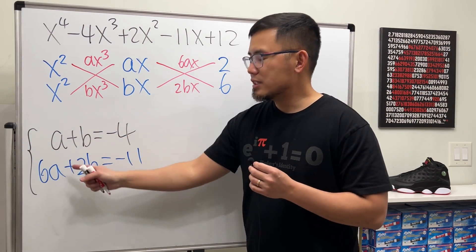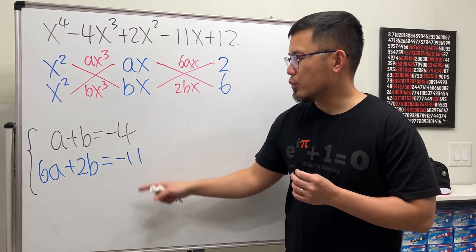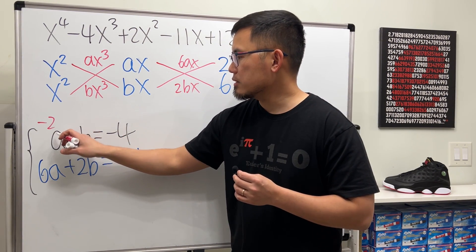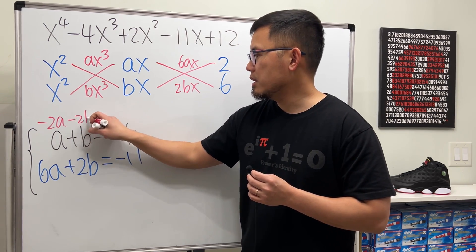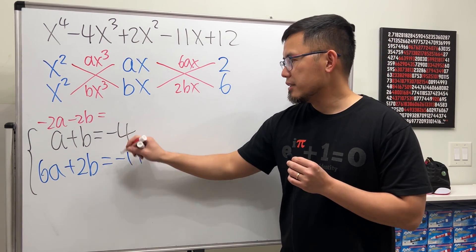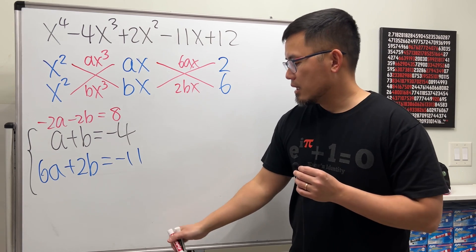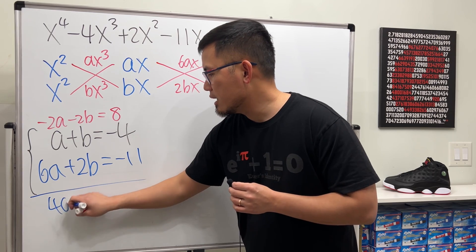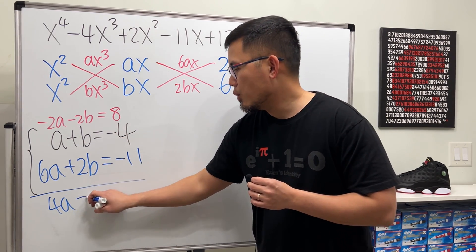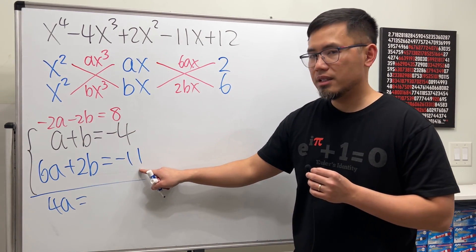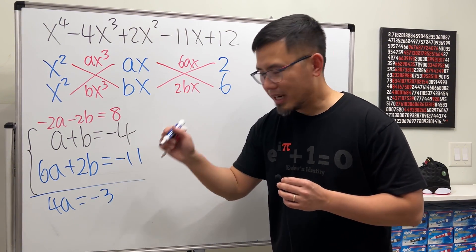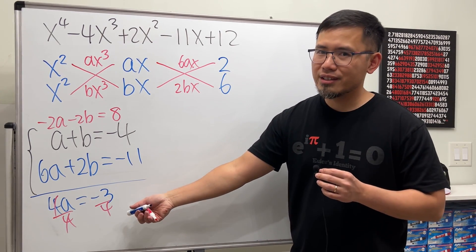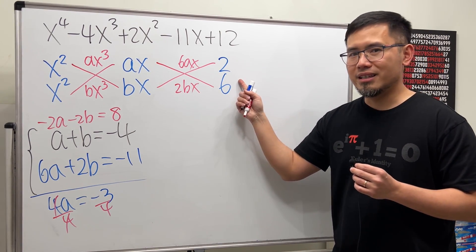So I will just solve this by elimination. Let me multiply the first equation by negative 2, so I will be able to get rid of the b. So negative 2a minus 2b equals negative 2 times negative 4 is positive 8. And then combine this and that, we get 4a. Combine this and that, they are just 0. And then equals, combine 8 and negative 11, that's negative 3. But after divide both sides by 4, you see that a is a fraction. That means this right here is incorrect.